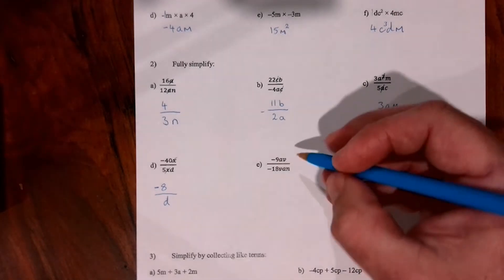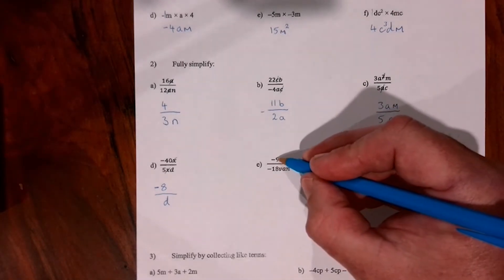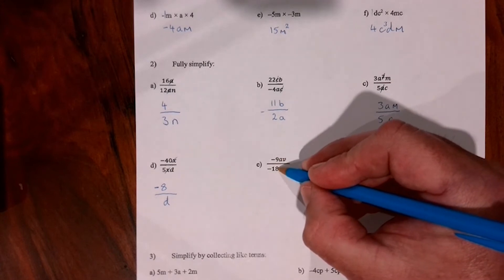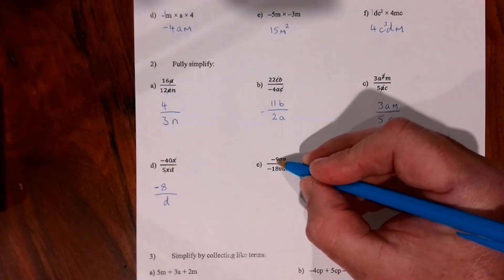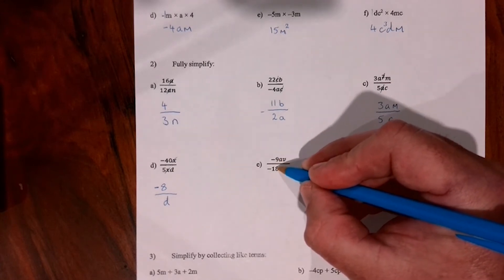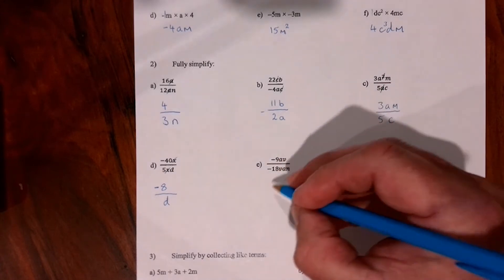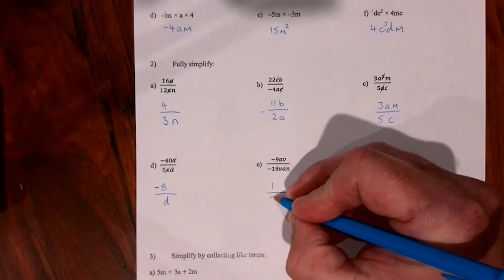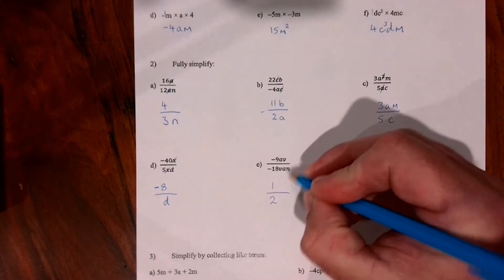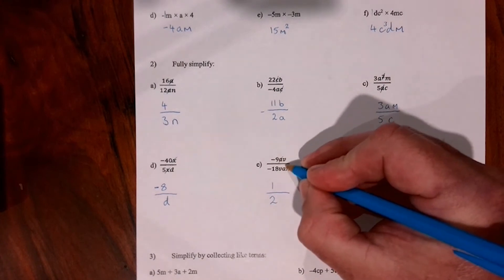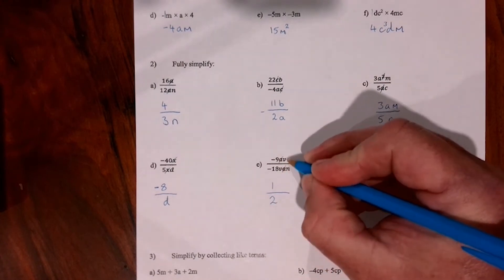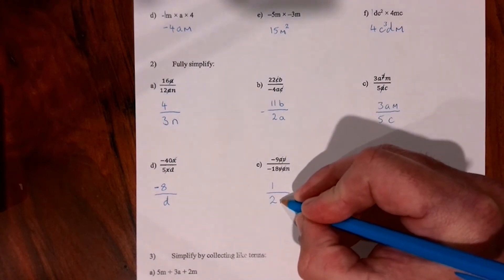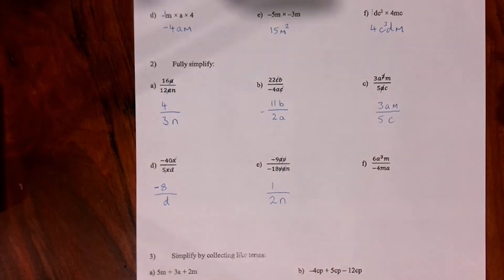Question 2e: negative 9 divided by negative 18. When you divide one negative by another the answer is positive, and we know that this becomes one half. The a's eliminate one another, the v's eliminate one another, and all that's left on the bottom is an n.